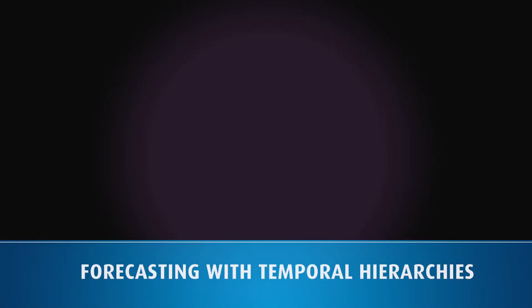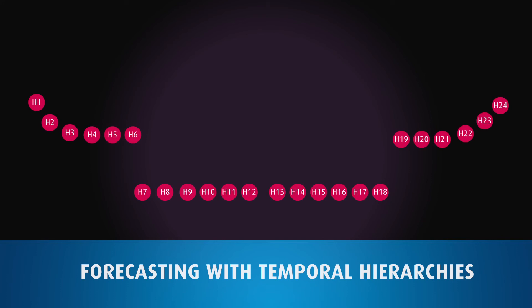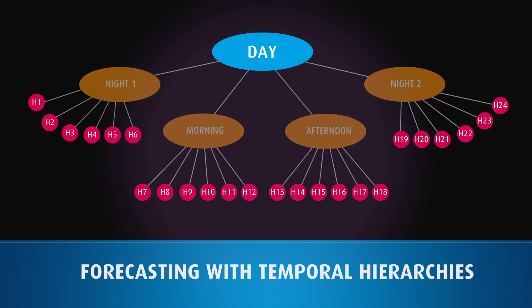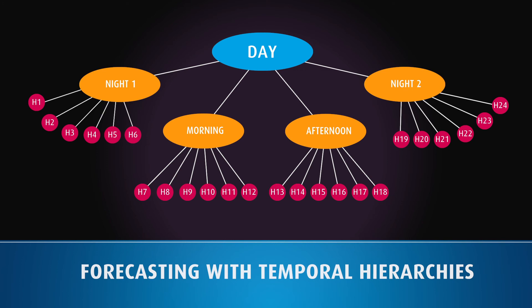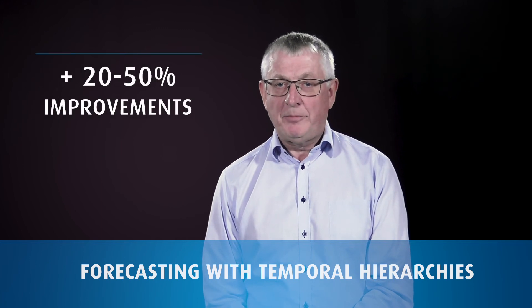Consider, for instance, forecasts of the electricity consumption on hourly resolution and, at the same time, daily forecasts are also constructed. Then it is clear that the sum of the 24 hourly consumptions should correspond to the daily consumption. In a study related to our forecast of the electricity load in Sweden, we have seen 20 to 50 percent improvements by a joint consideration of hourly and daily forecasts. Please see the provided references.